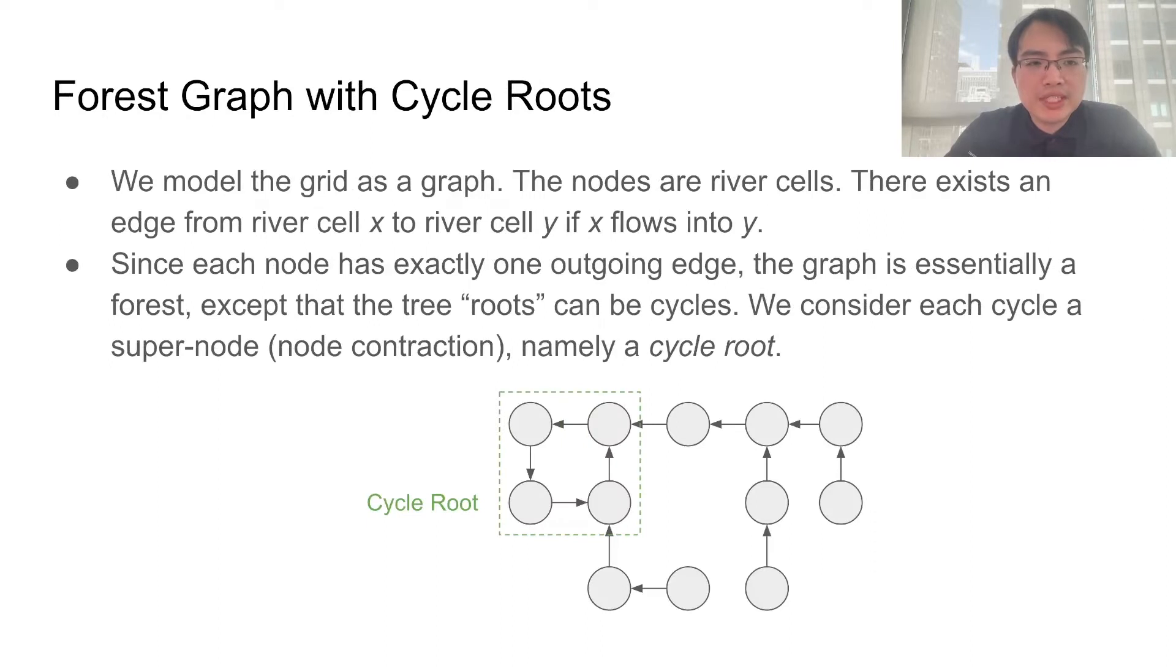We will model the grid as a graph. The graph nodes are river cells. There is an edge between two river cells if one of the river cells flows into the other one.